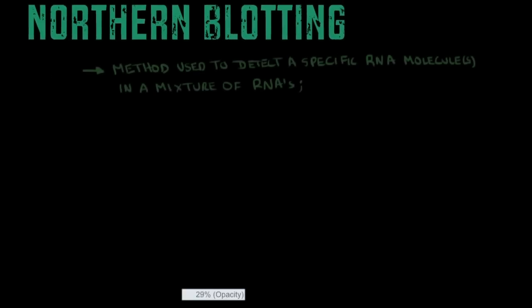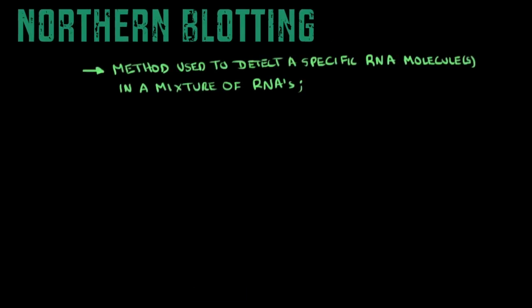As the name indicates, southern blotting and northern blotting have similar functions. But while you use southern blotting to detect a specific DNA molecule within a mixture of other DNA molecules, you would use northern blotting to detect an RNA molecule, or a few RNA molecules, in a mixture of other RNA molecules.